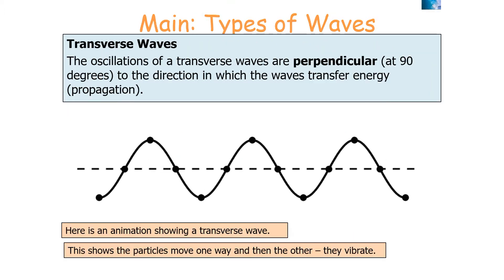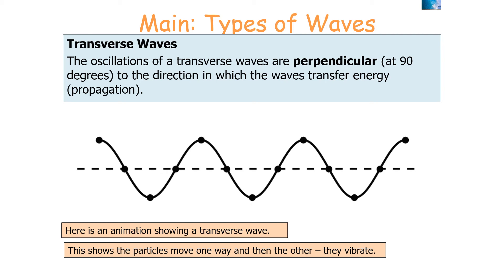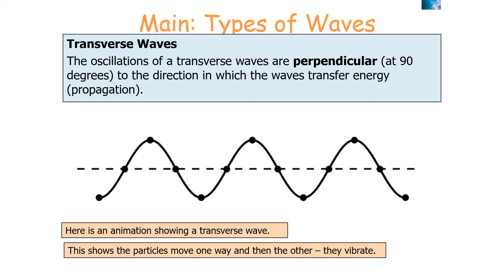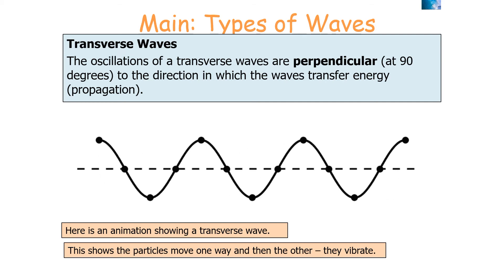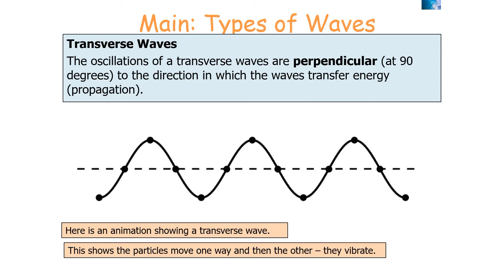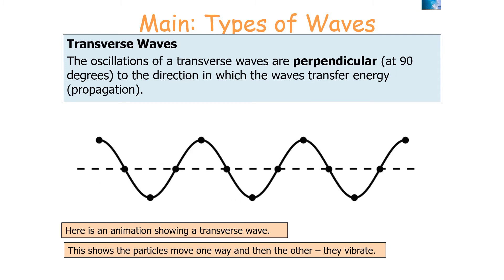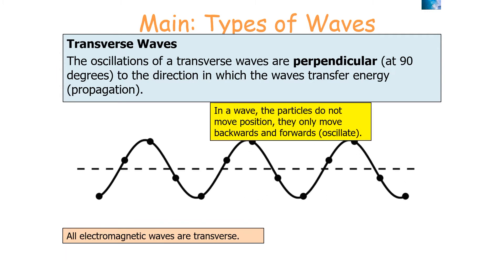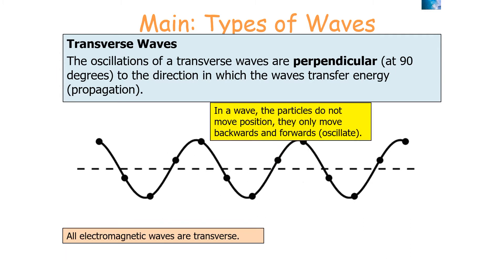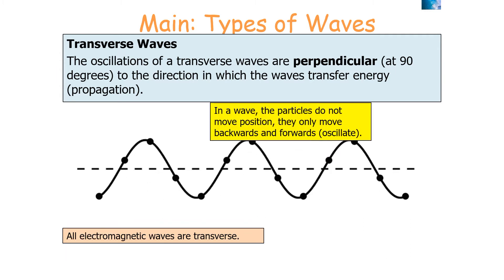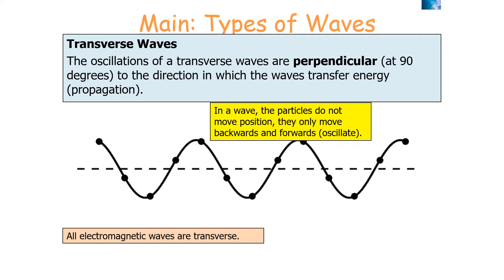The oscillations of a transverse wave are perpendicular, or at 90 degrees, to the direction in which the waves transfer energy. As you can see in this animation, the particles move one way then the other — they vibrate. It's important to know that in a wave, the particles do not move position; they only move backwards and forwards. They oscillate.